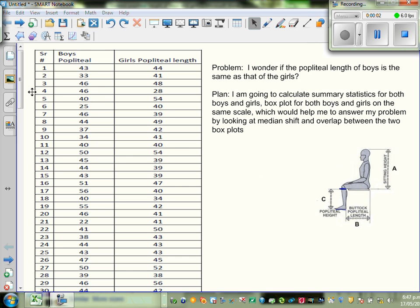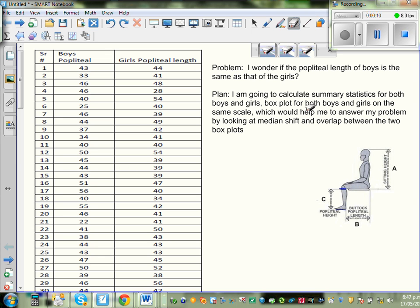Now this is a sample of 30 students, 30 boys and girls popliteal length or popliteal height. The distance from your knee to the end of your foot is called popliteal height or popliteal length. From this data the question that should arise is I wonder if the popliteal length of boys is the same as that of girls.